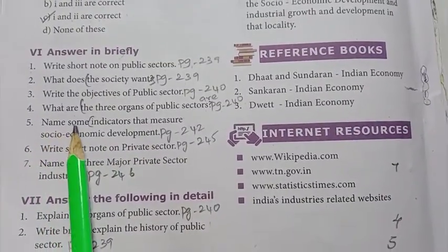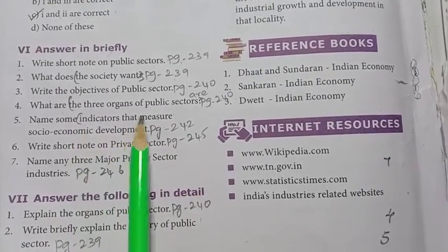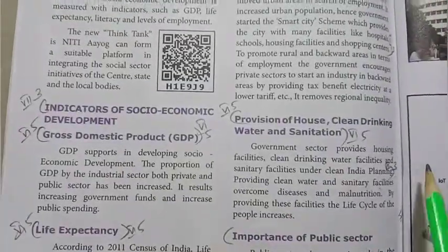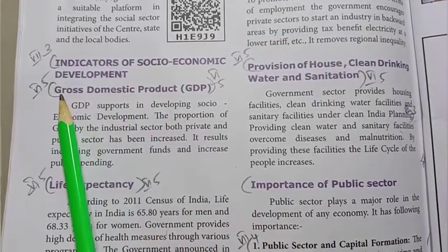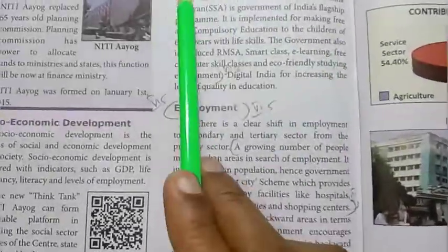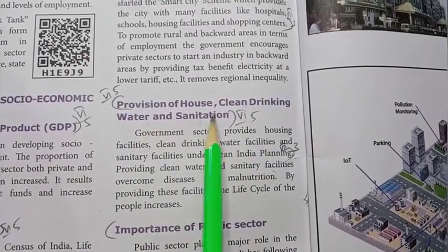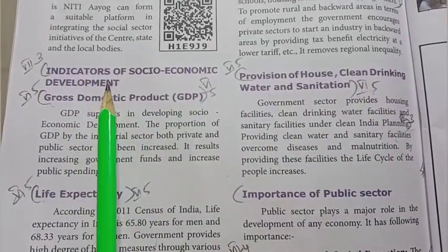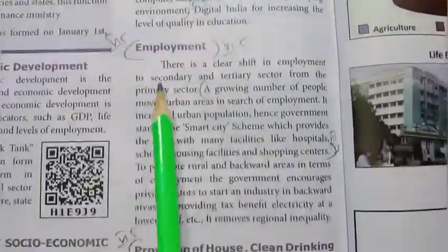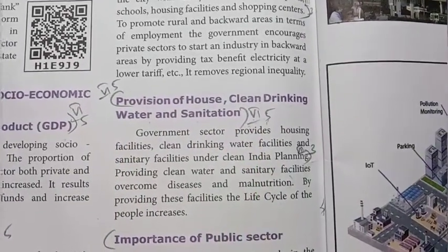Fifth question: name some indicators that measure socio-economic development. Refer to page number 242, under the heading 'indicators of socio-economic development' in bold letters. The indicators are: gross domestic product, life expectancy, literacy, employment, provision of housing, and clean drinking water and sanitation.